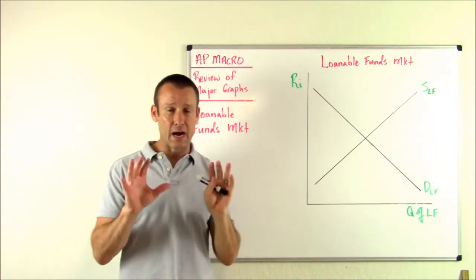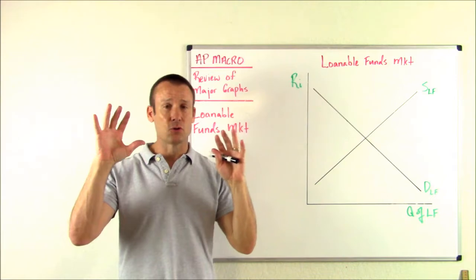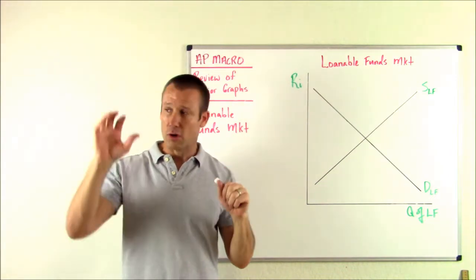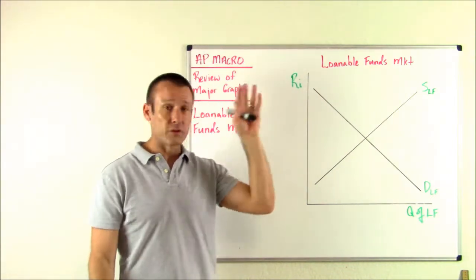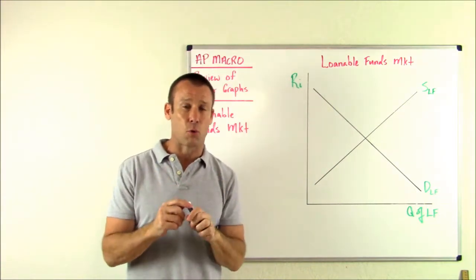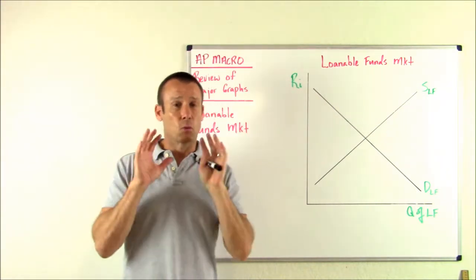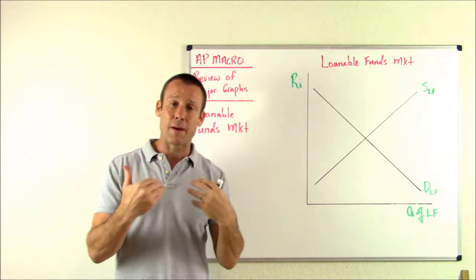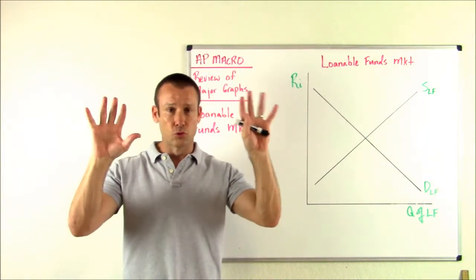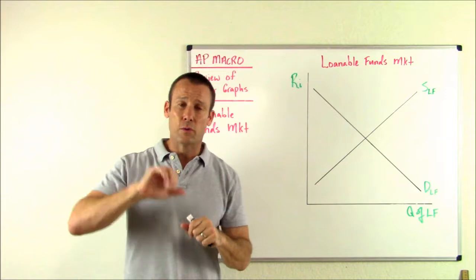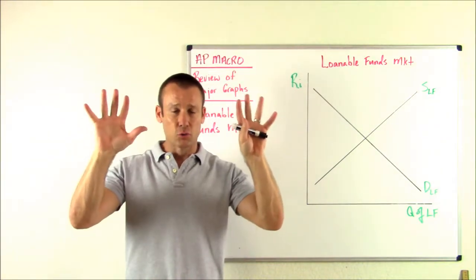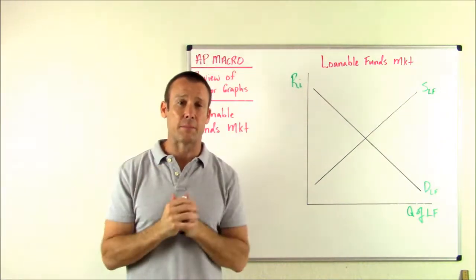Here's the thing. Economists, when they start talking about what's happening to interest rates, have two tools to go to. They go to the money market, or they go to this graph, the loanable funds market. It's really important how economists think about this. When we start saying what's happening to interest rates in an economy, we have two graphs — two tools. We either go to the money market or the loanable funds market. These are our tools for finding out what's happening to the interest rate.